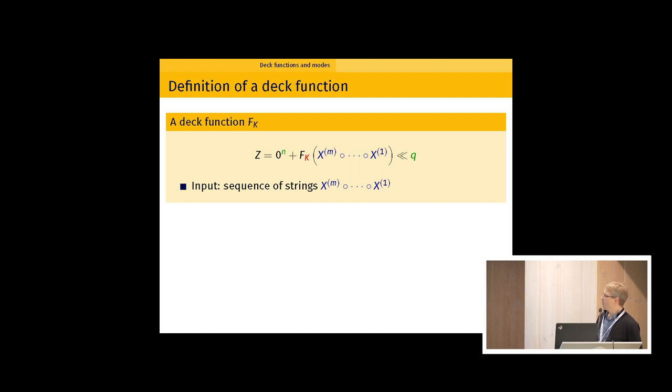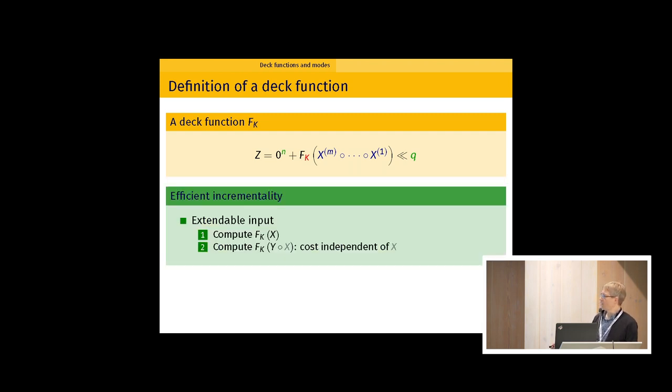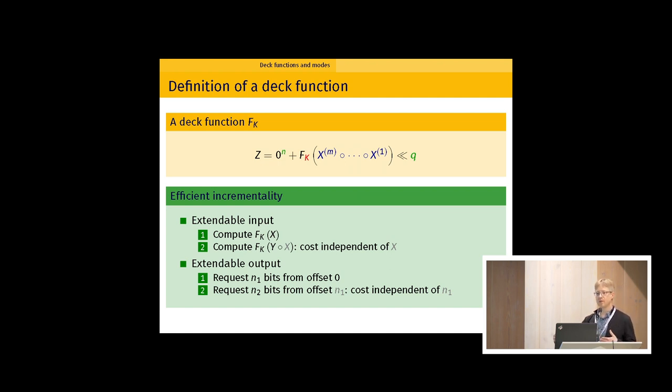So it's doubly extendable, meaning that it has some incrementality properties. First on the input, if you compute fK of X, then you save some state, and you want to compute f of Y after X, then the cost of computing this new evaluation does not depend on X, it only depends on the length of Y. And clearly the Farfalle construction allows for this. And similarly on the output, it's also extendable on the output. You can request first a number of bits, then more bits and more bits. And every time you ask for more bits, you don't need to start from the beginning, you just pay a cost that is proportional to the number of bits you ask for incrementally.